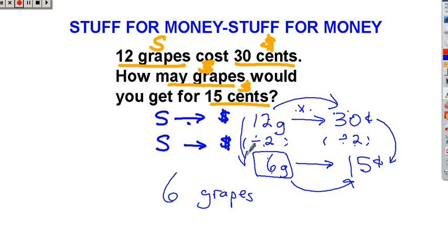So you can either go up and down or you can go side to side with your multiplication or division. You're not allowed to go this way or this way with your multiplication or division. It must be multiplication or division. Make sure you leave space in here. Make sure you draw your arrows. Give yourself plenty of room to show your work on these stuff for money problems.